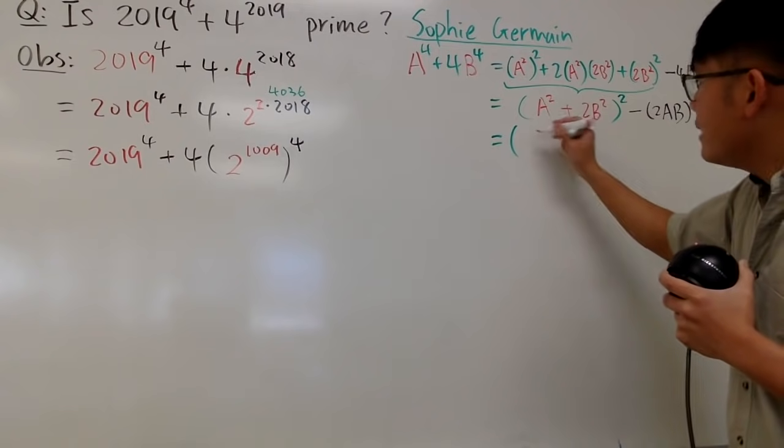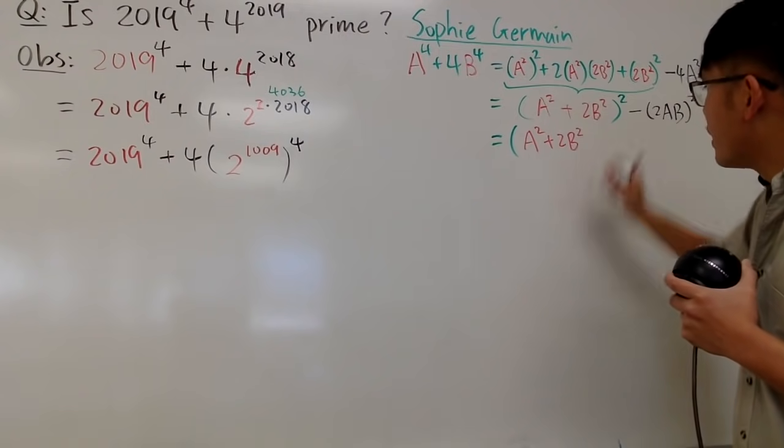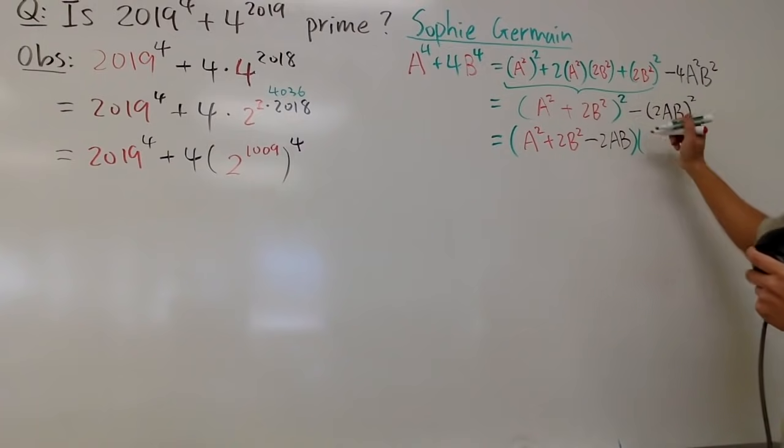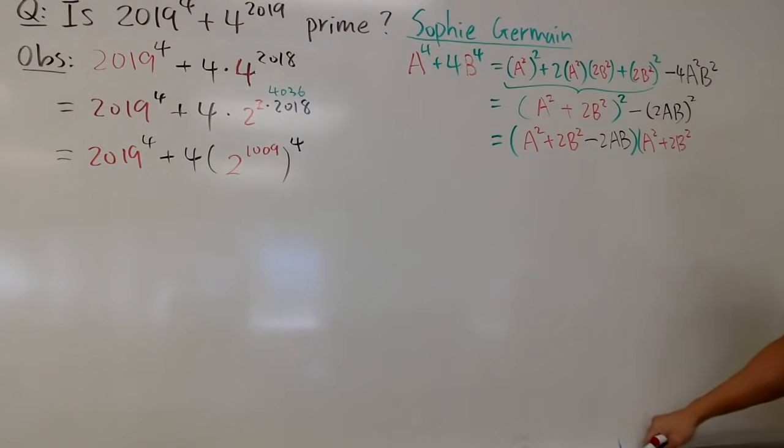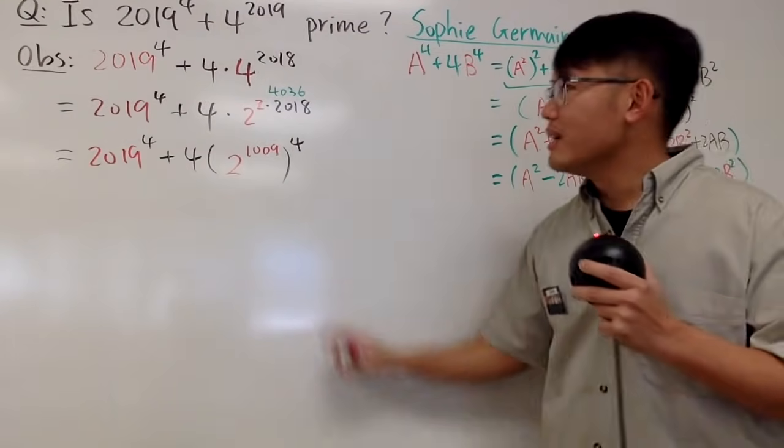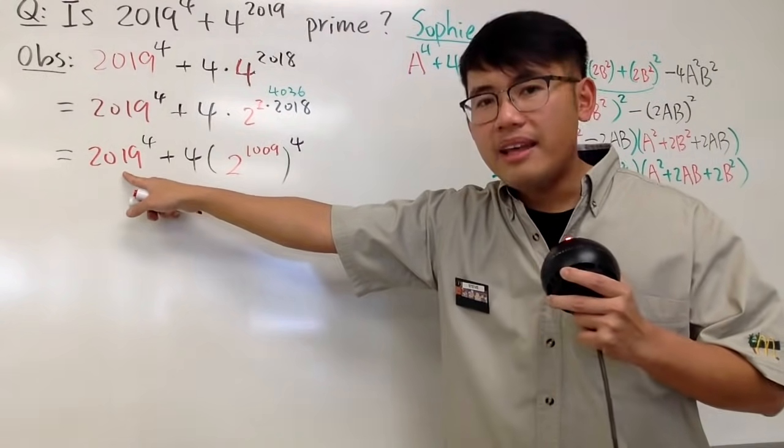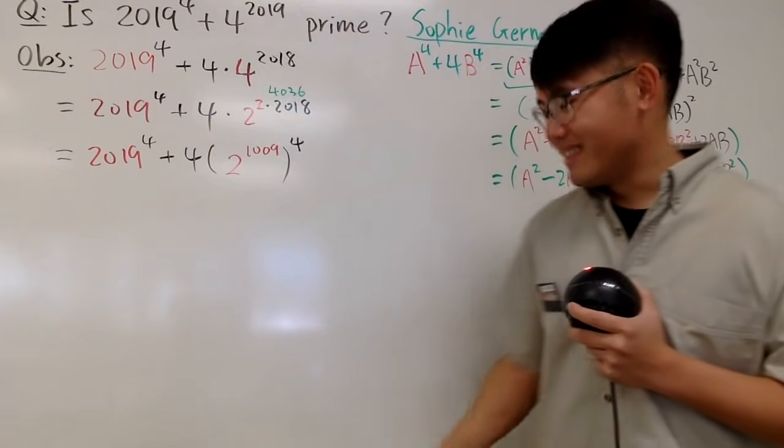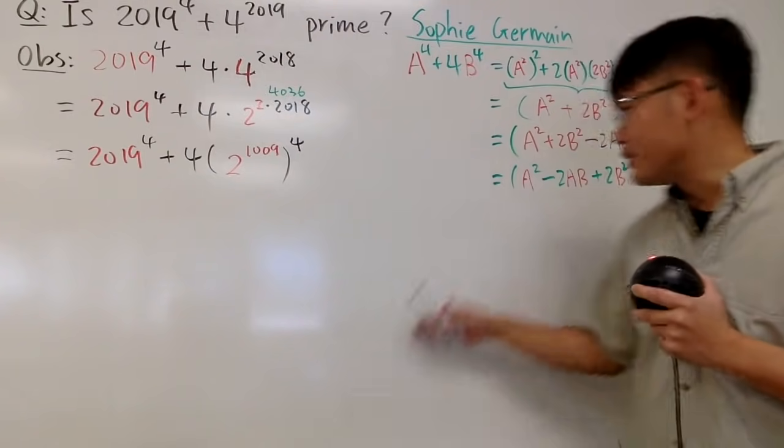So let me write it down. We will have (a^2 + 2b^2). And first, let me just write down, minus this guy, which is 2ab, and then we are going to multiply by (a^2 + 2b^2), and then plus 2ab, right here. And this is so wonderful, isn't it? Yes, it is.